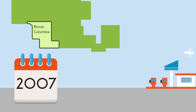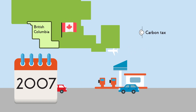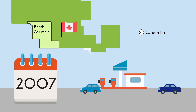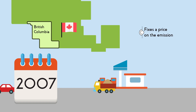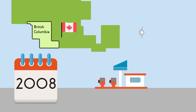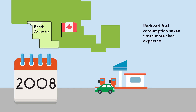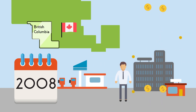On the other hand, governments can tax emissions. A tax, unlike the emissions market, fixes a price on the emission. The Canadian province of British Columbia in 2008 set a carbon tax and reduced fuel consumption seven times more than the local government expected. This permitted it to cut other taxes on personal income and companies.